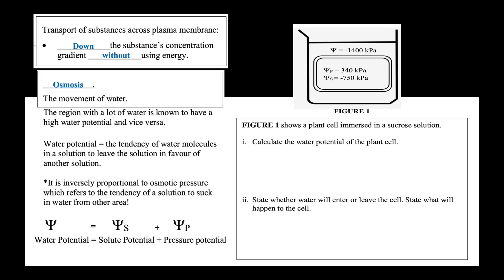The ability to calculate water potential of a particular solution will give you the ability to predict water movement. Water potential, often represented by psi (ψ), is equal to solute potential plus pressure potential. Let's have a look at the following exercise. This is a plant cell immersed in a solution with water potential of negative 1,400 kPa. These are the given values for the cell.